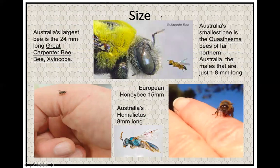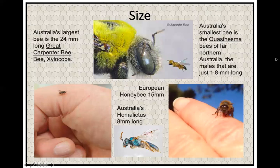Let's talk about bee sizes — they come in all sorts of shapes and sizes. Australia's largest bee is about 24 millimetres long, called the great carpenter bee. If you take your two thumbs and put them side by side so the thumbnails join, that's about the length of a carpenter bee. Australia's smallest bee lives in the far north and is called the quasihesma — not even 2 millimetres long. The males are absolutely tiny.